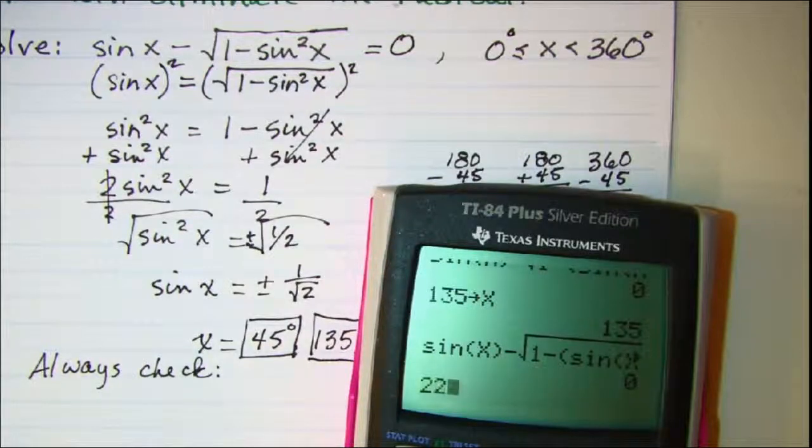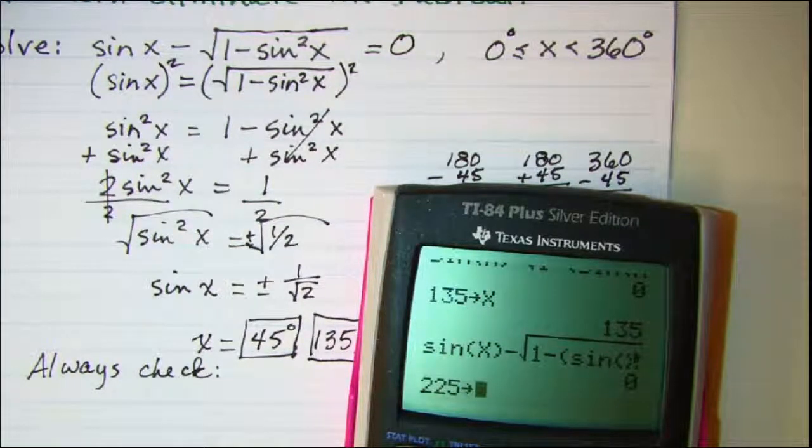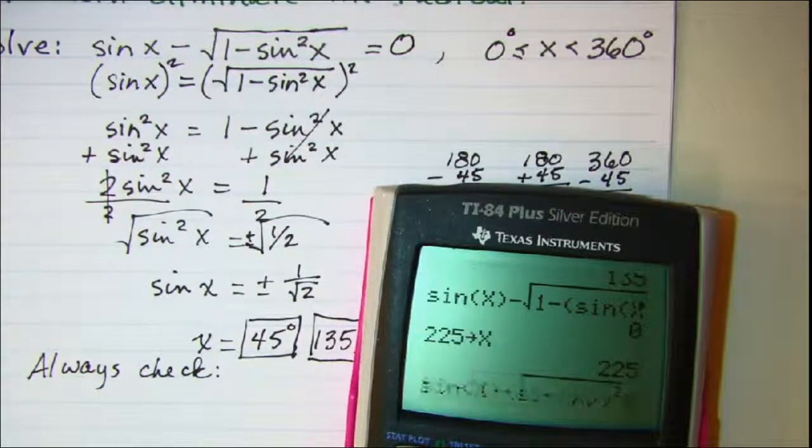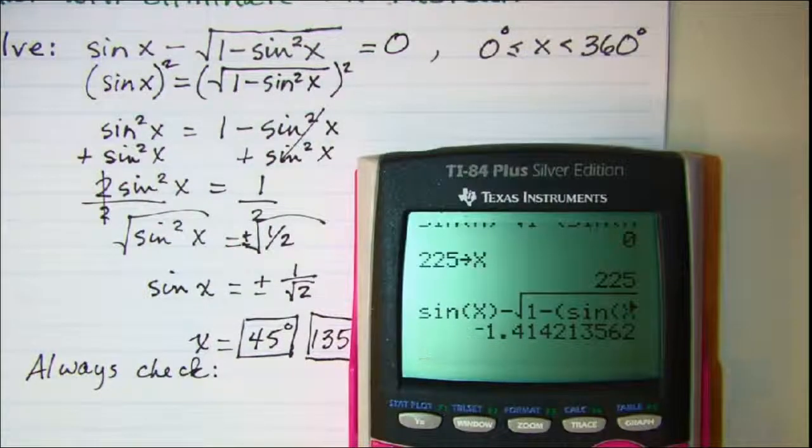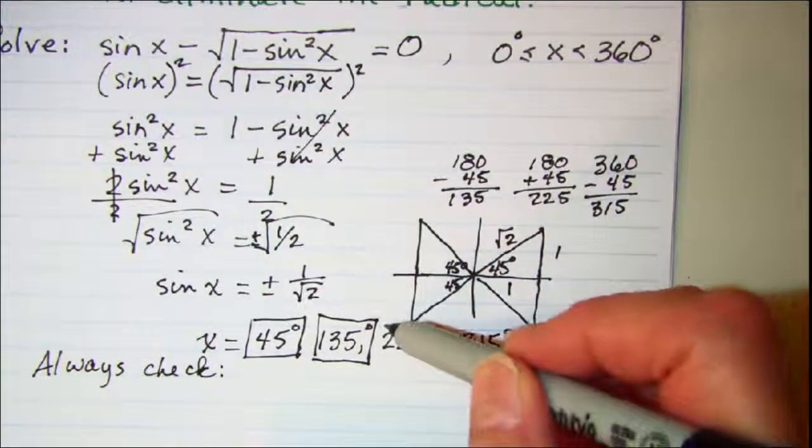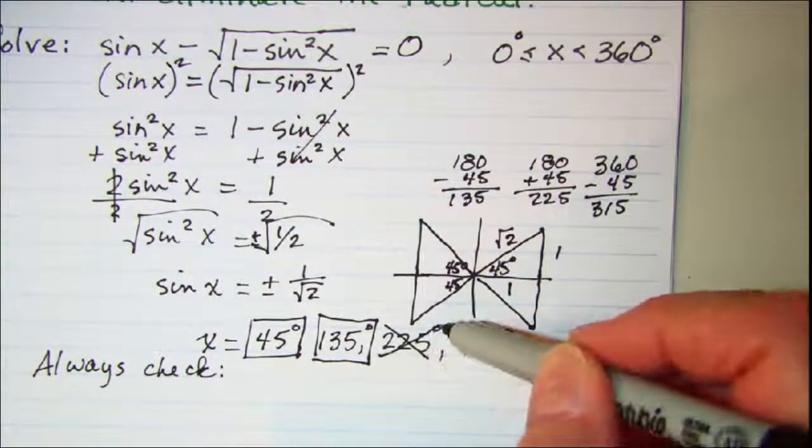And then 225. That is not 0, so 225 will not work and cannot be in my solution set.